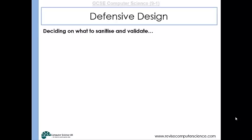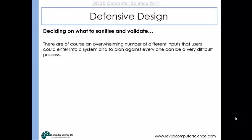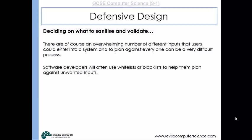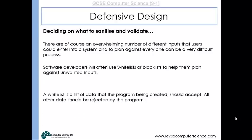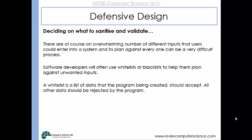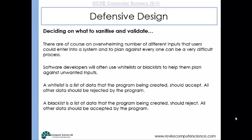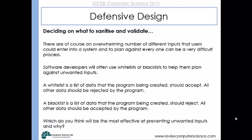When you're writing your programs, how will you decide what to sanitize and validate? Well, there are so many different combinations of inputs that users could enter into a system, and to plan against every single one will be very difficult indeed. So what software developers use is something called a whitelist or a blacklist to help them plan against unwanted inputs. A whitelist is a list of all the data that the program should accept — everything else that is entered would be rejected. On the other hand, they might choose to make a blacklist, which lists all the data that the program should reject, so all other data should be accepted except for the stuff that's on the blacklist. So which one is probably more effective in preventing unwanted inputs?